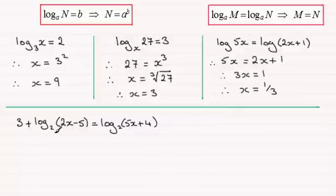Now with this last example, as I pointed out earlier, you'll notice that we've got three terms now. So how do we handle equations like this where we've got more than two terms? Well what we do is we group the logs to one side and any of the non-log terms, we keep on the other side.